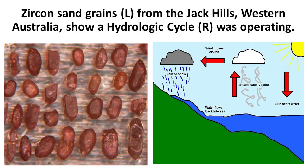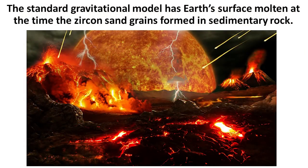Zircon crystals making up sand grains from some of these rocks in the Jack Hills contain a form of oxygen that can only occur when a hydrologic cycle is in operation. This means there was an ocean with evaporation, clouds, rain and rivers. So the actual evidence from these rocks is not only that the Earth started off cool, but there was time for evaporation and rain cycles to operate before these rocks were heated. In contrast, the gravitational approach requires the Earth's surface to have been molten — but that molten Earth was meant to exist at the very time when the zircon sand grains were formed in waterborne sediments, according to the atomic dating. So these zircon crystals show that the Earth's surface was obviously not molten.